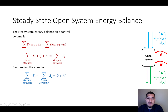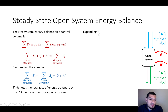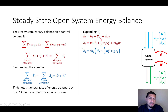We need to expand the terms in more detail. The total energy term E consists of three components: internal energy, kinetic energy, and potential energy. We can expand it as mass flow rate multiplied by specific internal energy, plus mass flow rate multiplied by v-squared over 2, plus mass flow rate multiplied by gz. This can be written with mass flow rate as a common factor multiplied by the three specific energies.